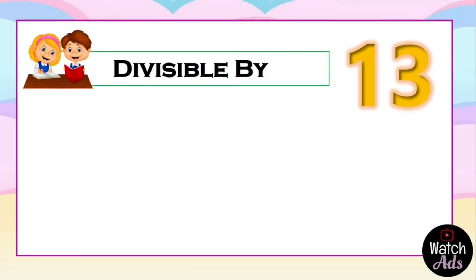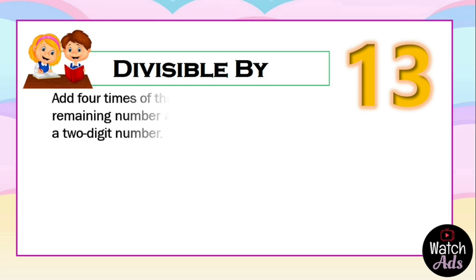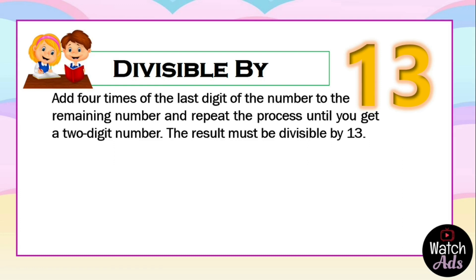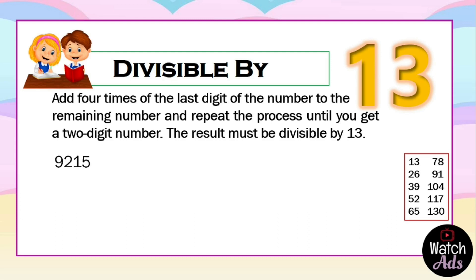For divisibility by 13, we will undergo a series of steps just like we did with divisibility by 7. We add four times the last digit of the number to the remaining number, and repeat the process until we get a two-digit number. The result must be divisible by 13. Note that the table of 13 is quite hard to memorize, so we have a reference table. Let's have our first example: 9215.